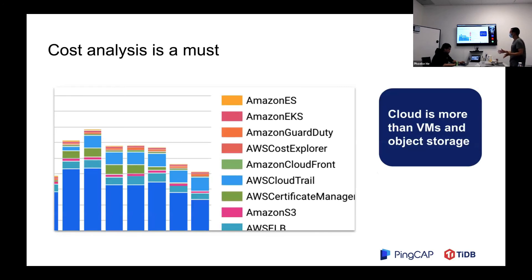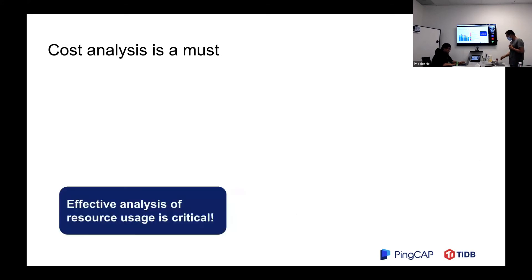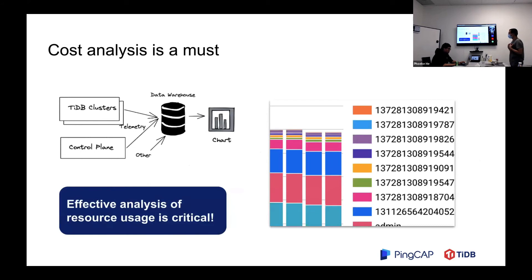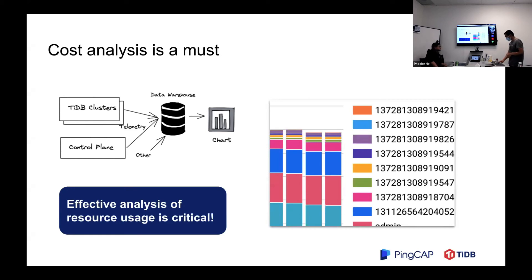Another thing about cost: on cloud, cost analysis is a must. Cloud is more than VMs and object storage — we use all kinds of resources. It's very crucial to establish your own data pipeline to collect all the data, usage, bills, and costs into a data warehouse and do the analysis efficiently. We have a lot of pertinent usage metrics, and you have to know yourself much more deeply.